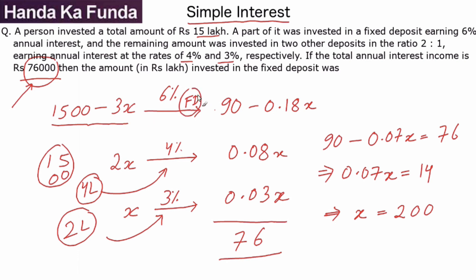So when 2 lakhs and 4 lakhs are gone, 6 lakhs are gone. That means in the FD how much was invested? 15 minus 6 lakhs, or 9 lakhs was invested in the fixed deposit. So that will be my answer.